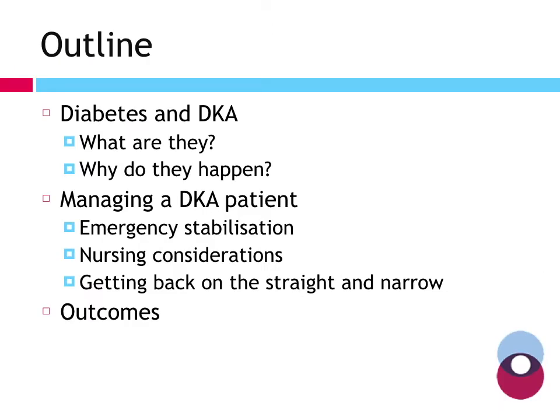We're going to have an initial outline of what diabetes and DKA are and why they happen, particularly why a diabetic patient tips over into diabetic ketoacidosis. Then we'll look at how we manage these patients in hospital — the initial emergency stabilisation — and why we do the things we do. We'll cover nursing considerations, how we get them back on a stable trajectory, and the outcomes we can expect.